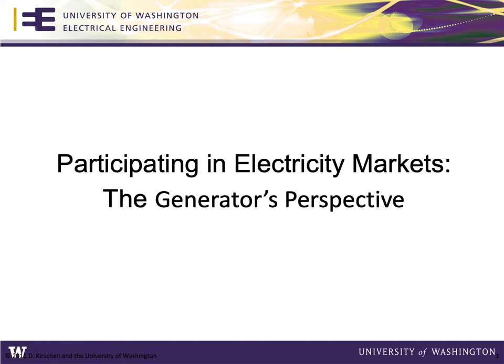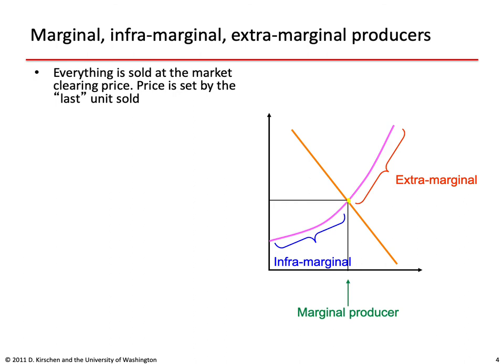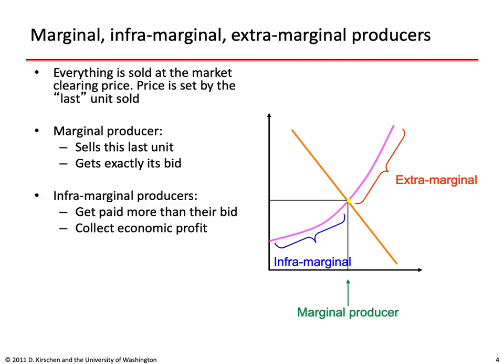Let's start with the perspective of a generator when participating in electricity markets. In a market, everything gets sold at the market clearing price, and this price is set by the last unit that gets sold. There are different types of producers: the marginal producer sells this last unit and gets exactly its bid; infra-marginal producers get paid more than their marginal cost and collect an economic profit; and extra-marginal producers sell nothing.